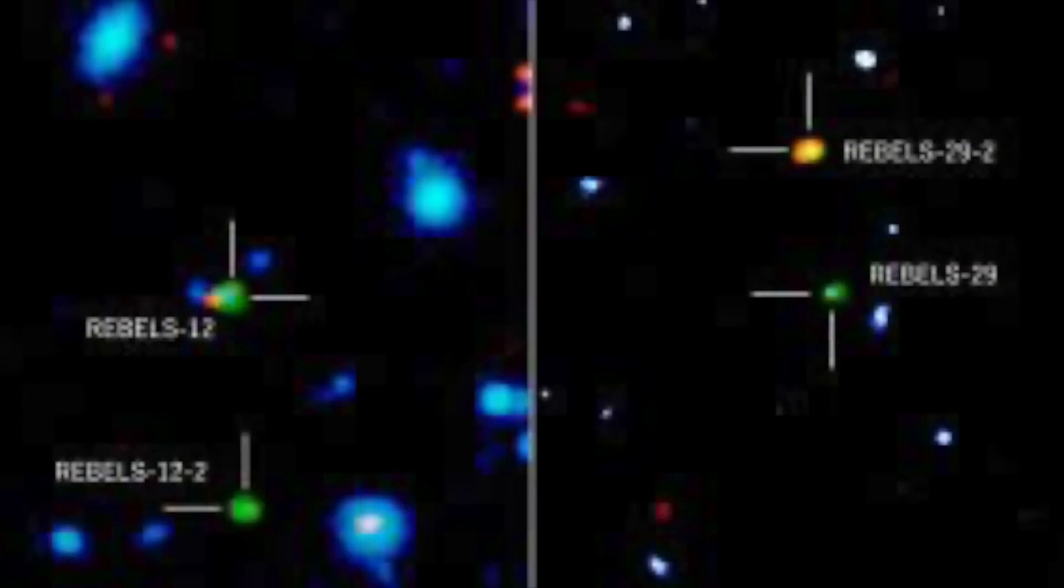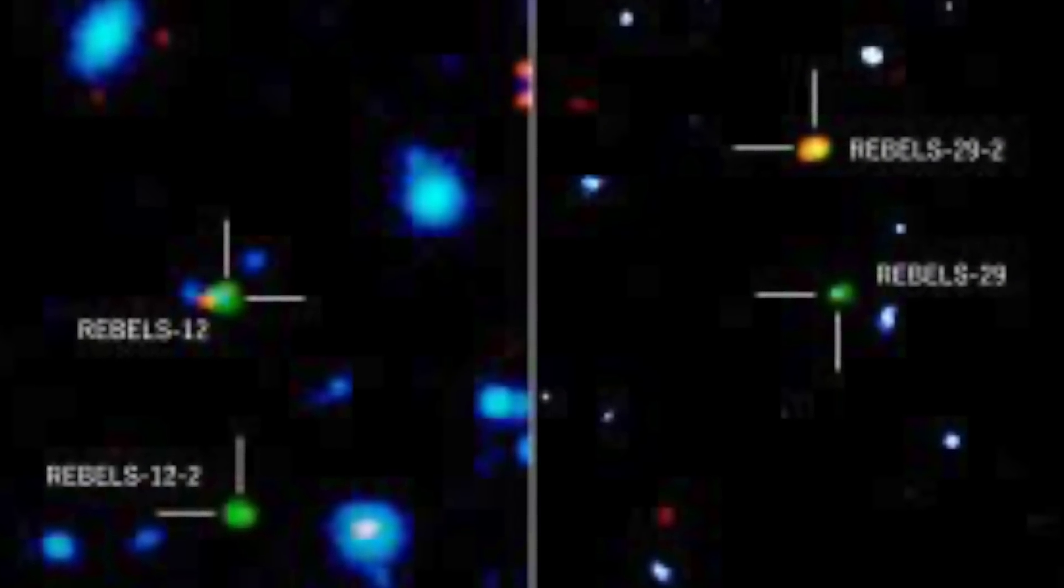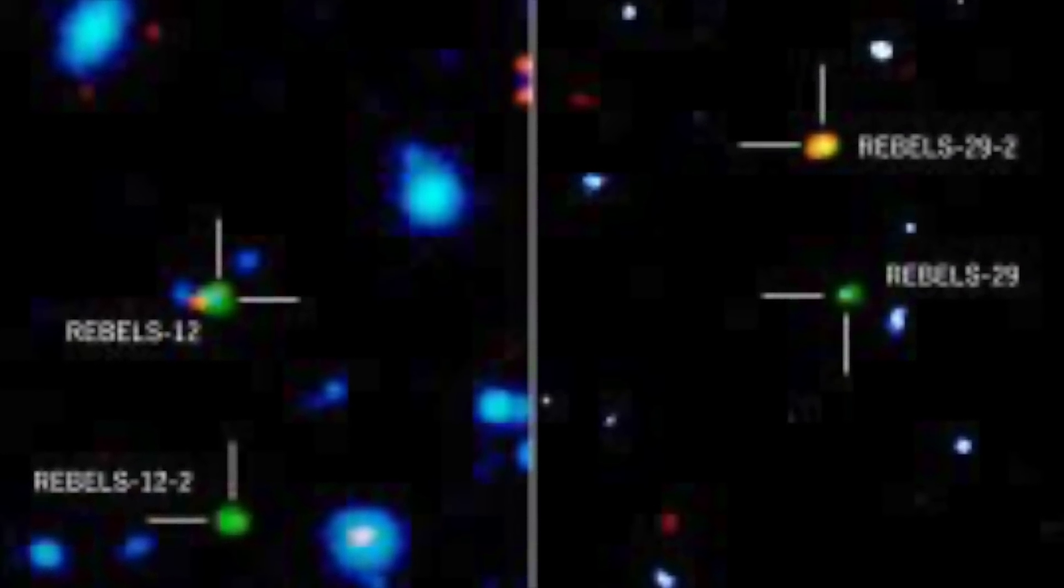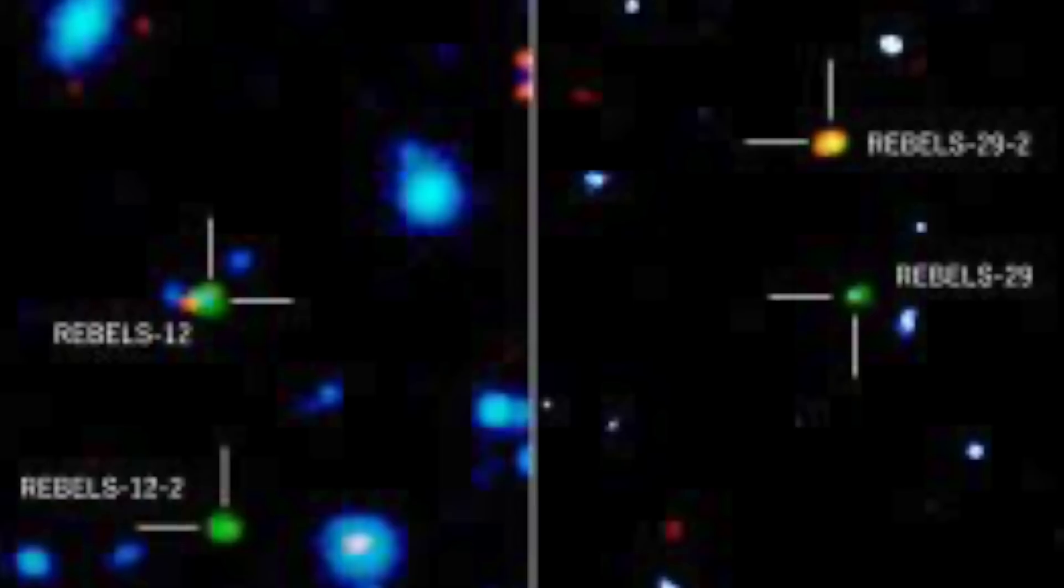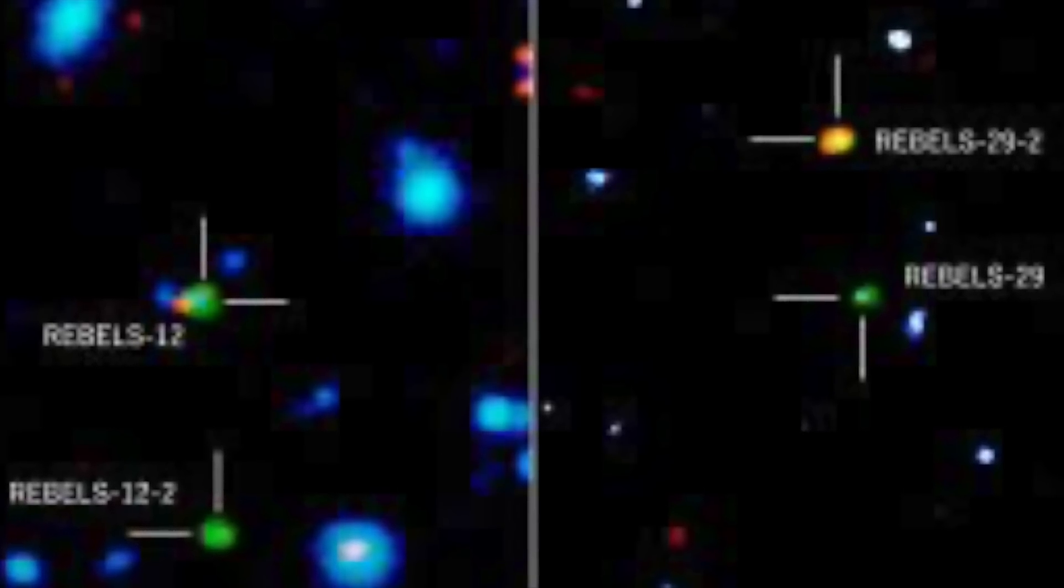The main tool used by Fudamoto's team, who are part of a program called Reionization Era Bright Emission Line Survey, was the Atacama Large Millimeter Submillimeter Array. ALMA is an extra-sensitive interferometer that is capable of seeing across incredible distances and through dusty environments. One astonishing feature of ALMA is it has the ability to see objects in the cosmic dawn era when stars and galaxies first formed.